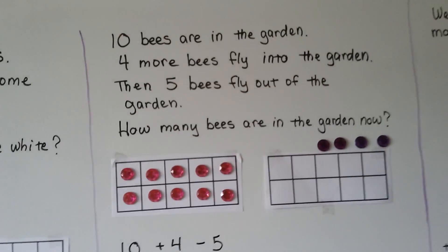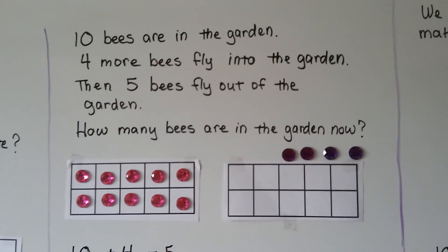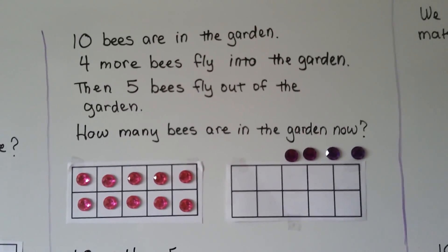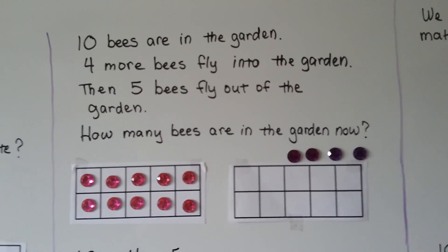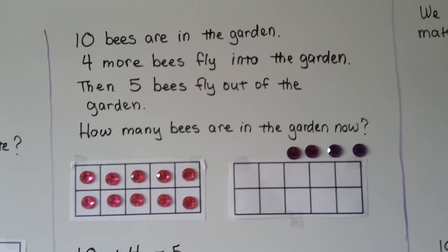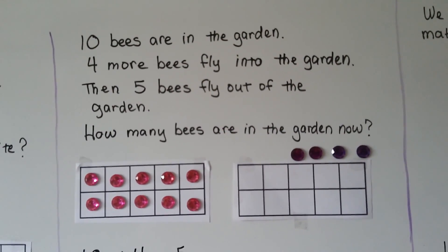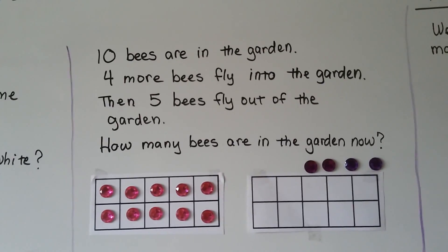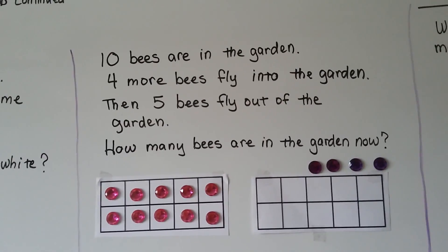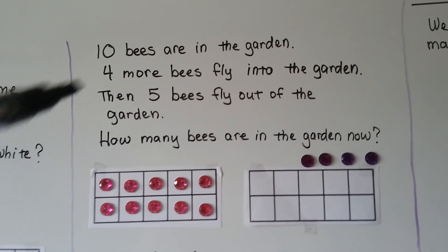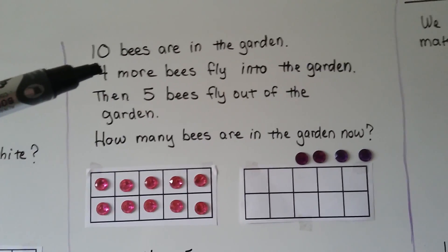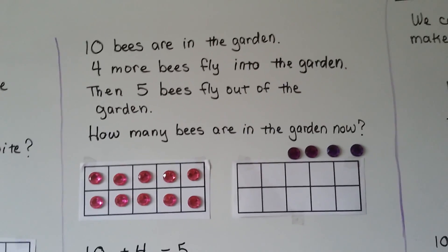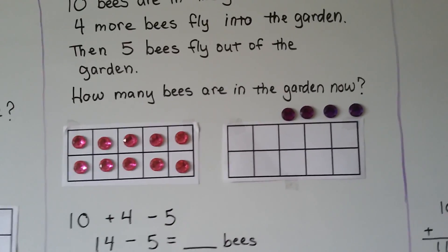This one's going to be a little trickier — see if you can do this with me. 10 bees are in the garden. 4 more bees fly into the garden. Then 5 bees fly out of the garden. How many bees are in the garden now? We need to find how many bees are in the garden right now. We're going to use that there were 10, then 4 more came, and then 5 left. We can use counters to help us.